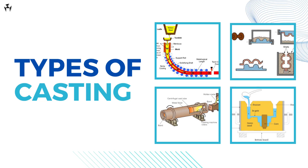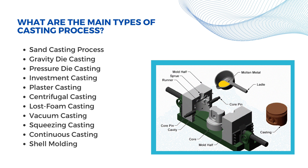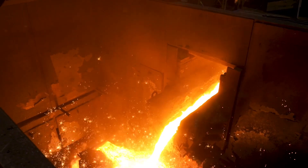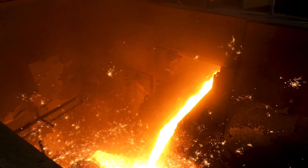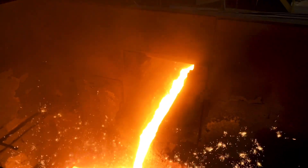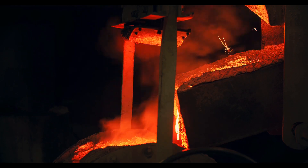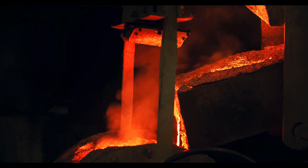Hello and welcome back. In this video we will dive into the main types of casting processes. But first, let us understand what we mean by casting. Casting is a way to make metal parts in the shape you want. You do this by melting the metal and pouring it into a mold. Then it cools down and gets hard.